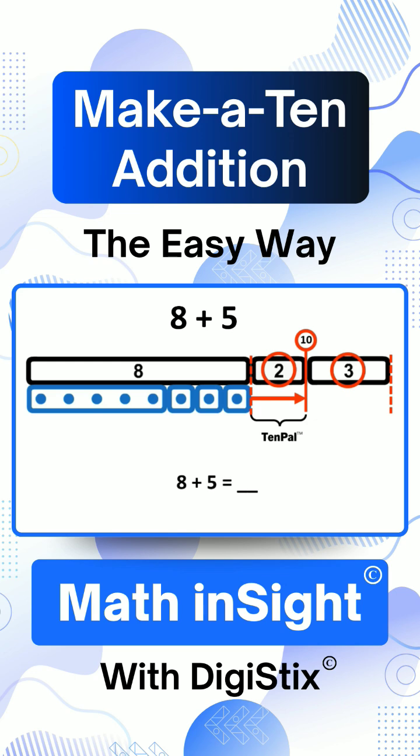So we decompose 5 into 2 and 3. We show 2, the 10-pal, like this. The second part of 5 is 3. It's the number over 10. We show it like this.